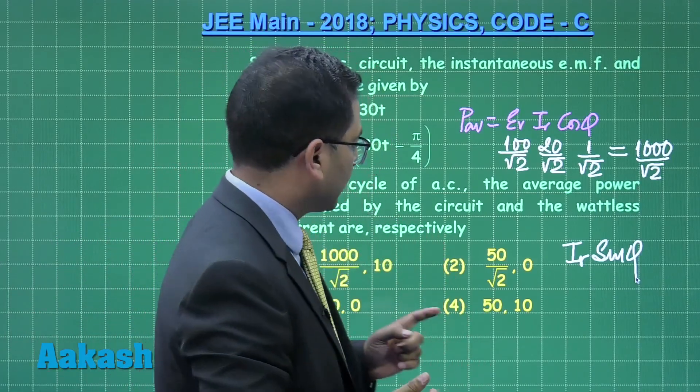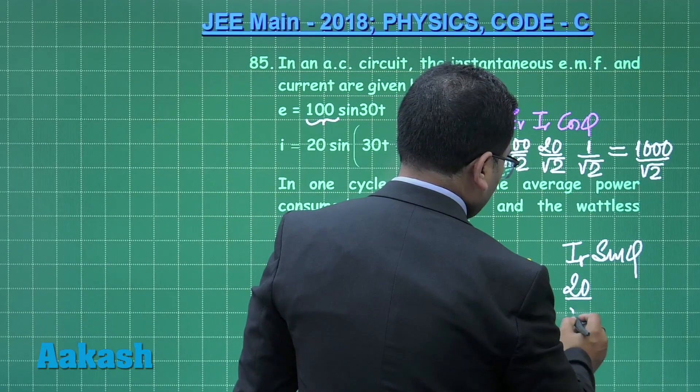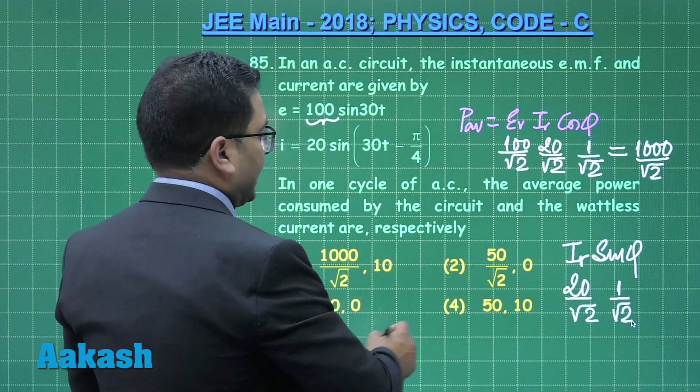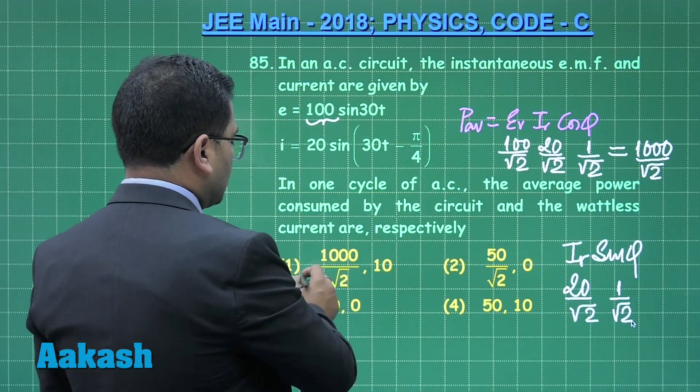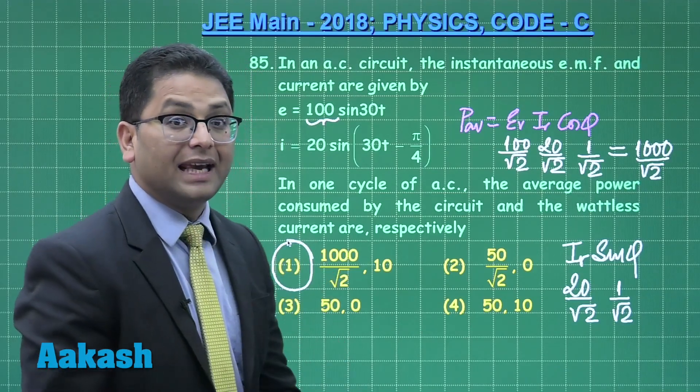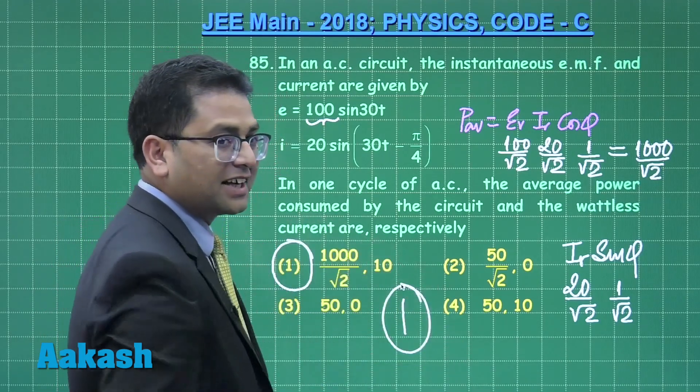And to calculate that value, I_RMS is yes, 20 by root 2, sine phi is again 1 by root 2, so this is going to be 10. And the power 1000 by root 2 and current 10 is in option number 1. So question number 85 has option 1 as the correct solution. Should we move to question number 86?